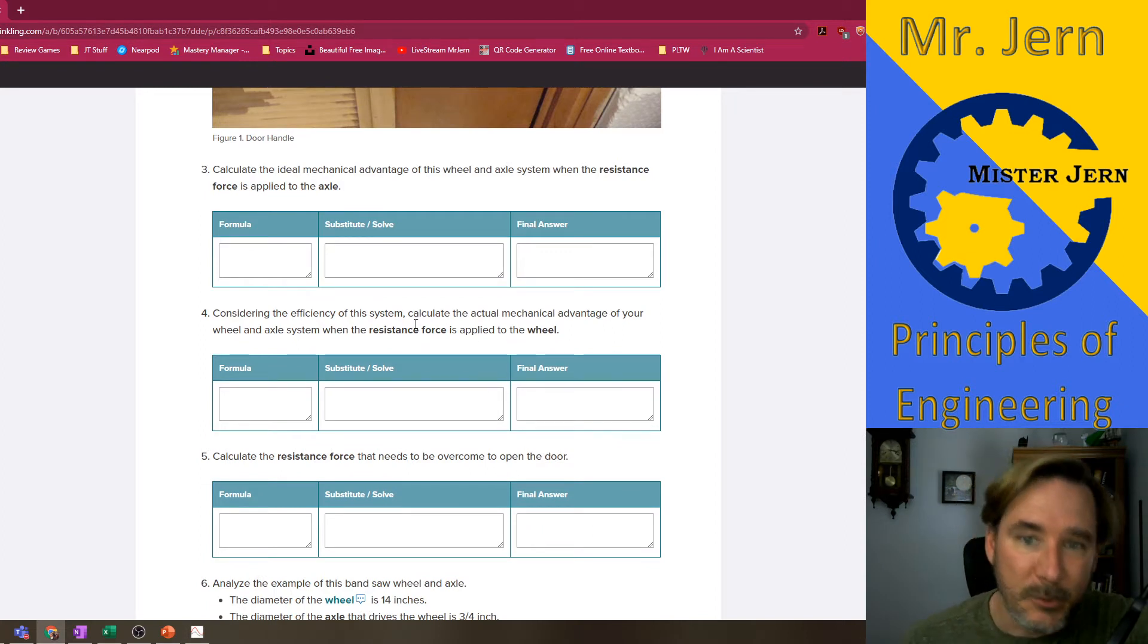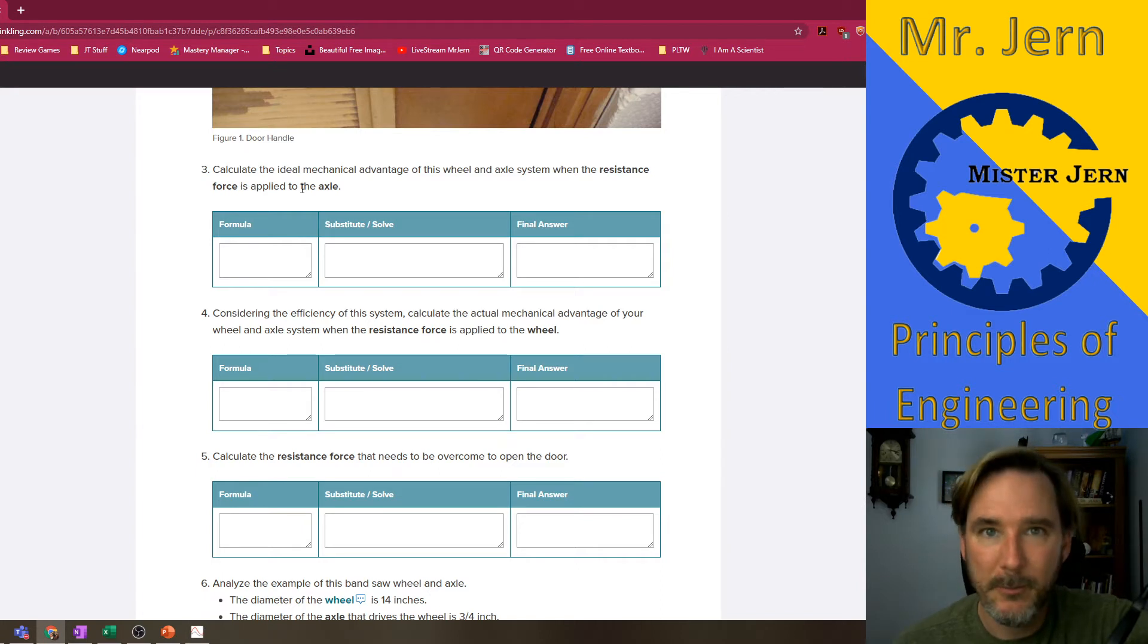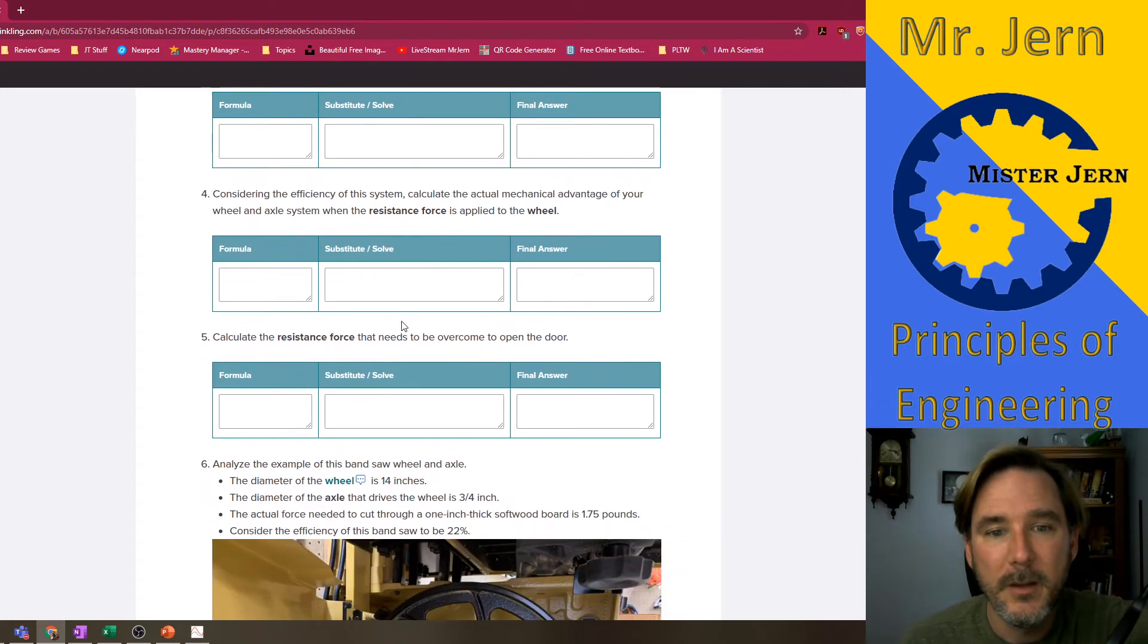Then, considering the efficiency of the system, now we know the efficiency. You have to calculate what is the actual mechanical advantage using what you figured out for the ideal mechanical advantage, knowing the efficiency. So algebra, it's all algebra. Once you got the actual mechanical advantage and you know the effort force required to open the door, what is the resistance force required to open up the door? That's it.